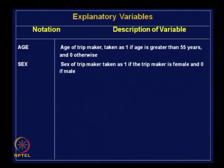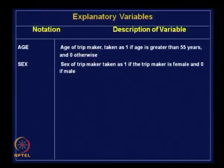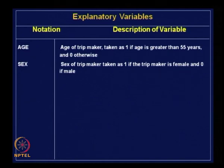Then sex — particularly in developing countries, sex is also a factor influencing mode choice. Think of ladies and gentlemen using bicycles in small towns and villages: the proportion of girls and ladies using bicycles is much less compared to gentlemen and boys. So as long as this is a significant factor, we have to use it, even though it may not be significant in a developed country. Sex of trip maker is taken as 1 if the trip maker is female and 0 if male.